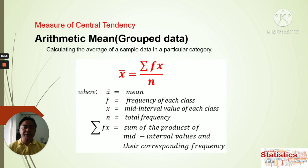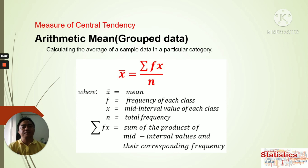We go to the arithmetic mean of grouped data. Before, we were calculating the arithmetic mean for ungrouped data, wherein we were only calculating the raw data to find the average mean. Now for this one, we're going to group the data — calculating the average of the sample data in a particular category, but this is in a group.